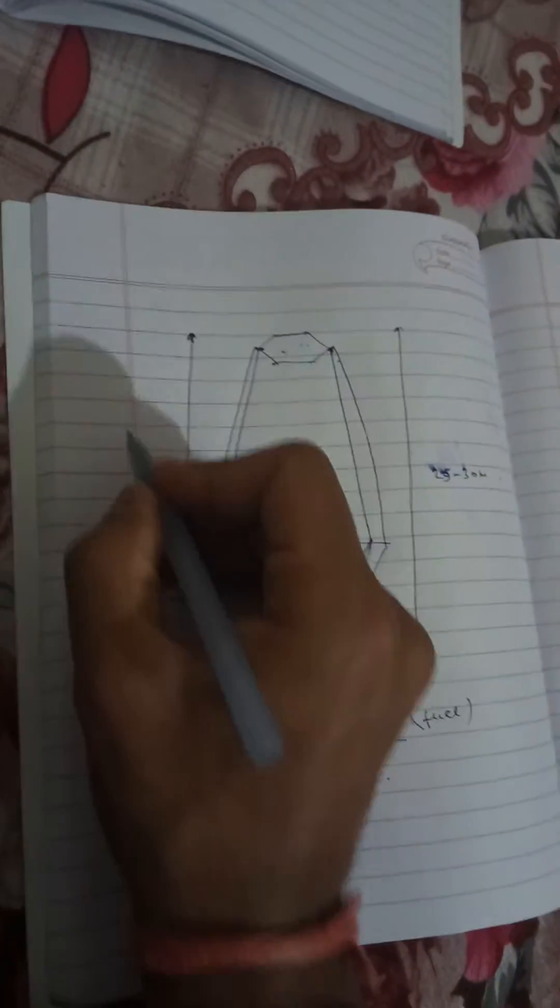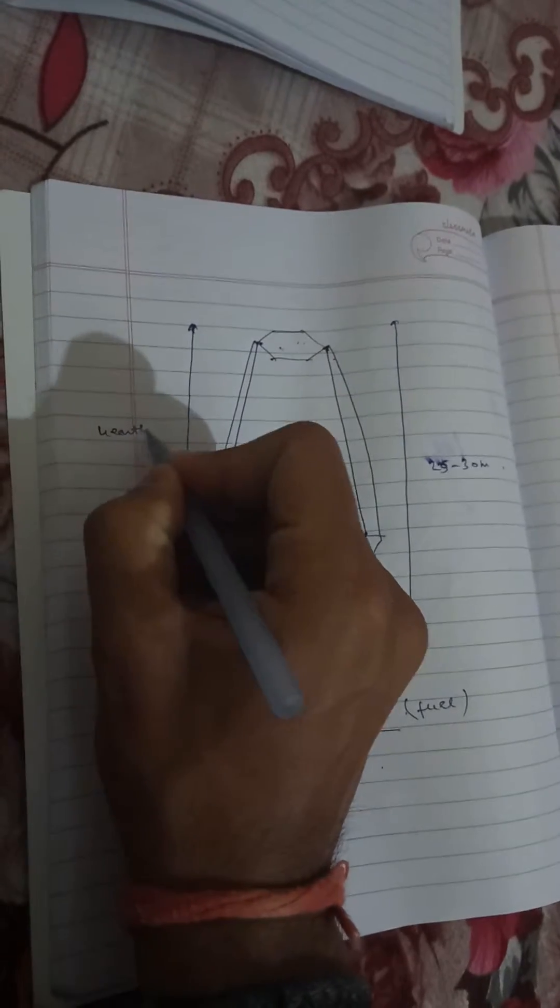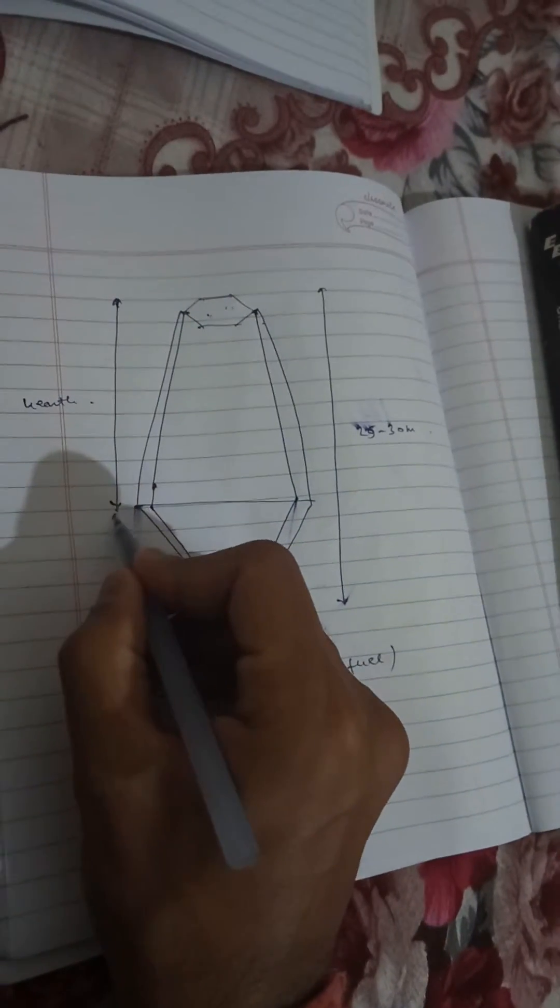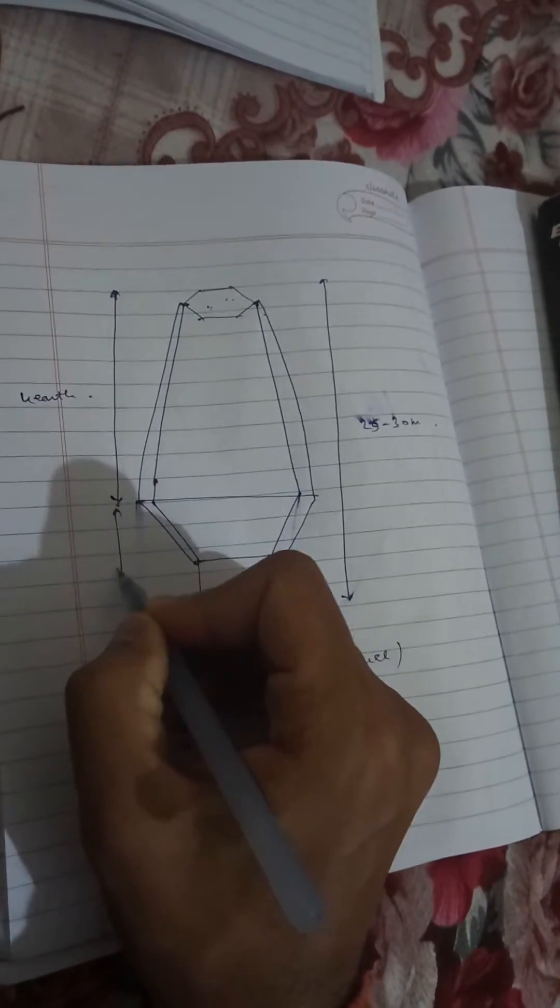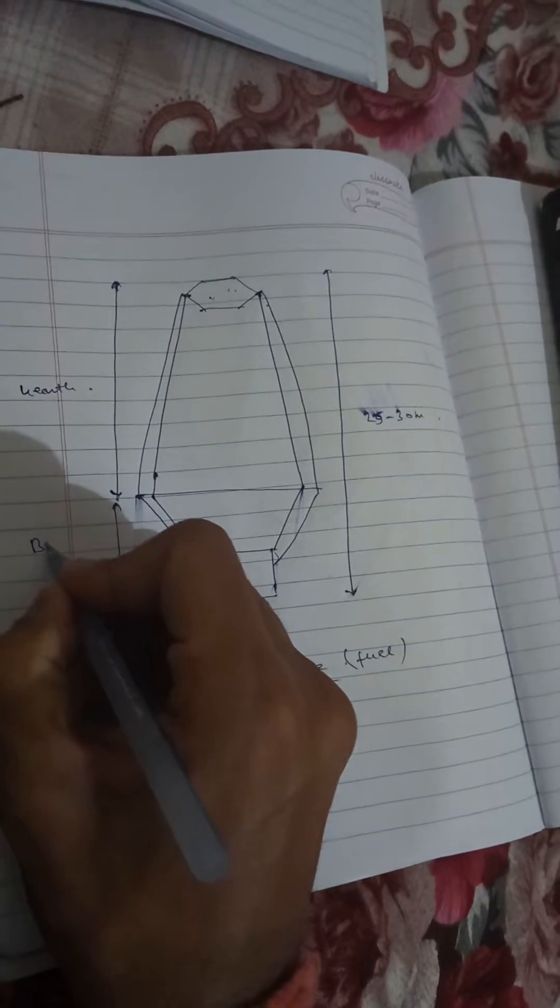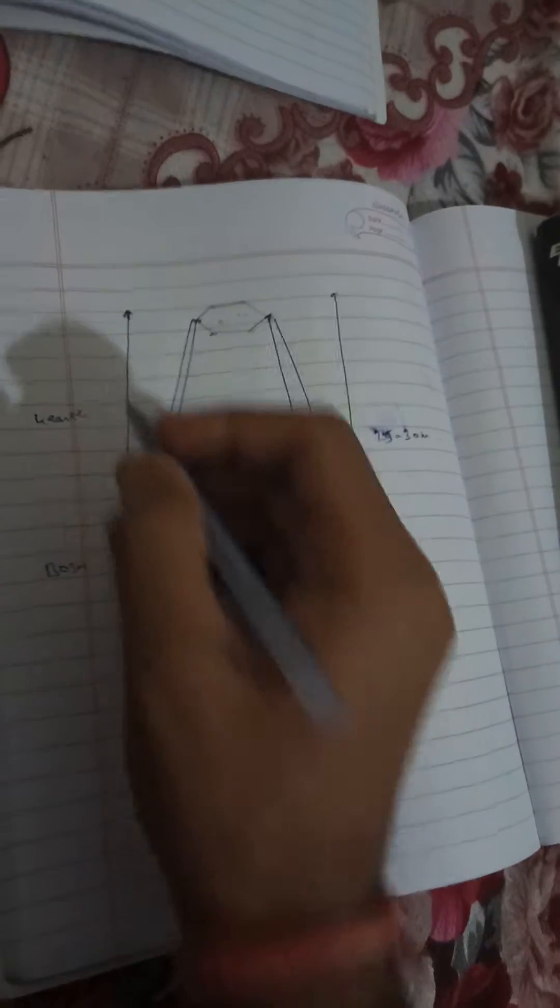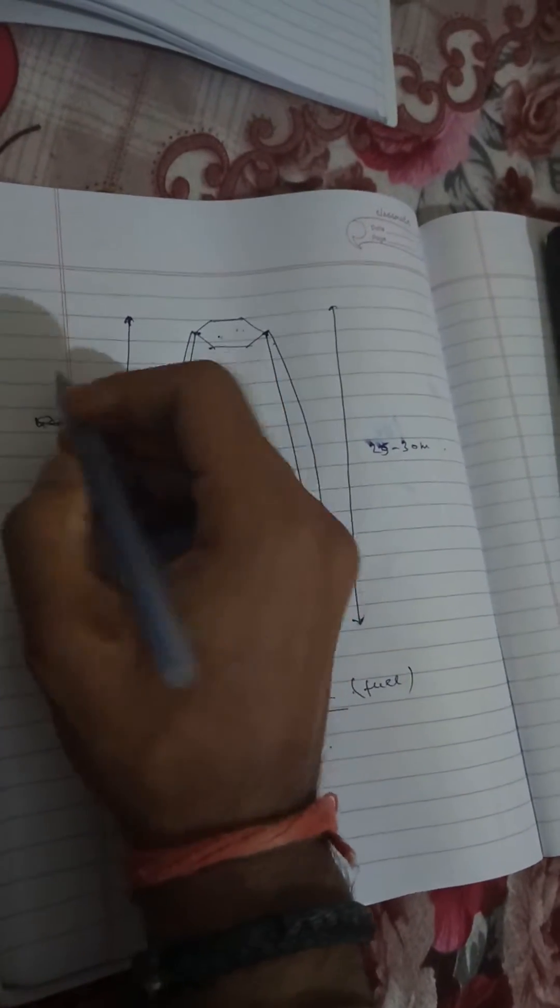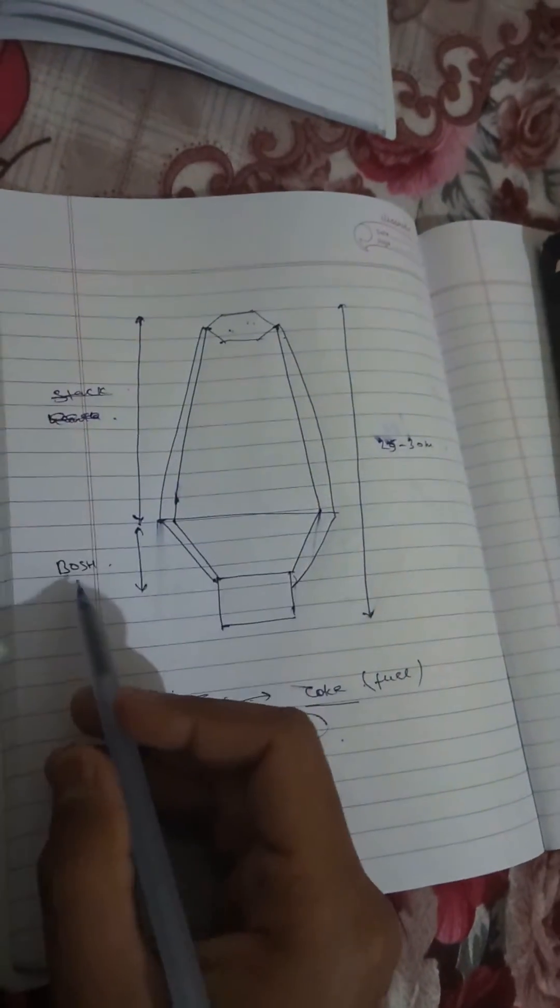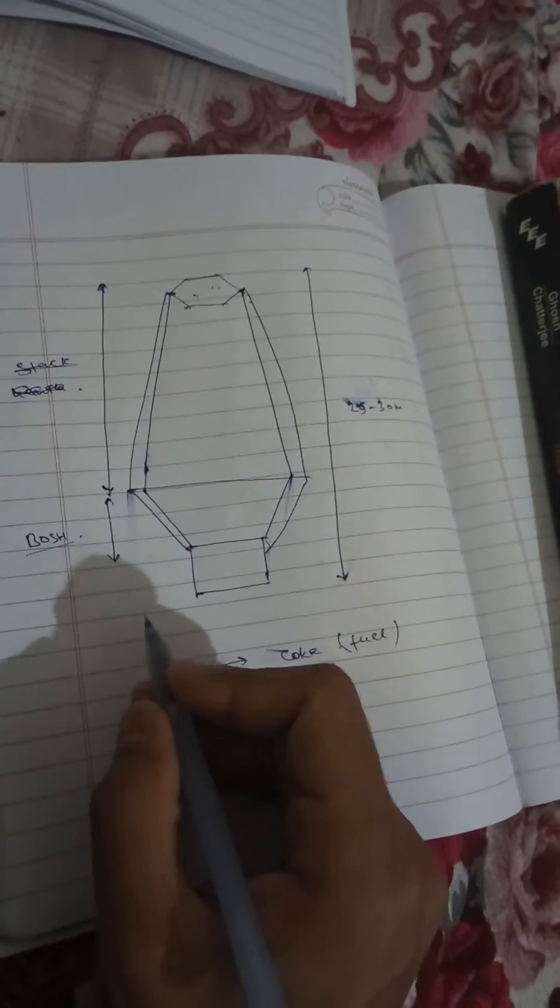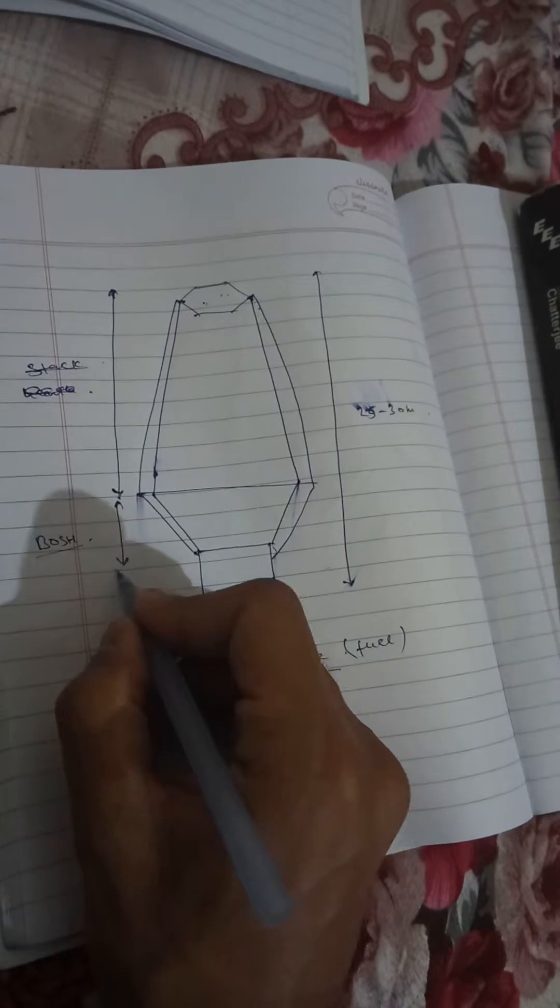This we call the hearth. And this is Bosh. Oh I think I am incorrect. This upper part is called the stack. This is the Bosh, and this is the hearth.